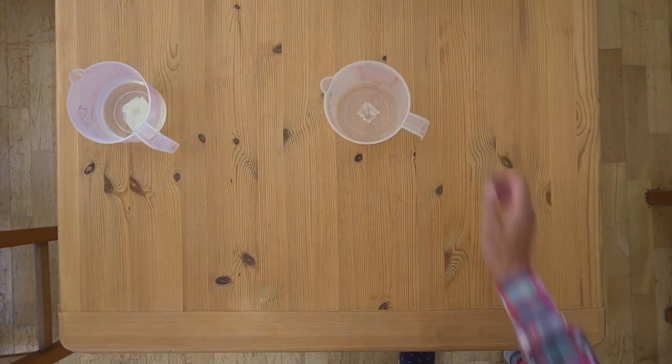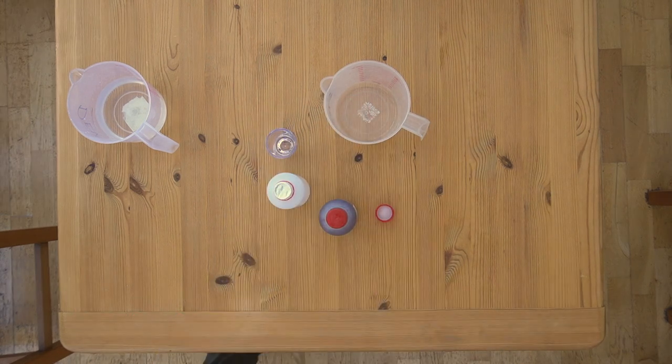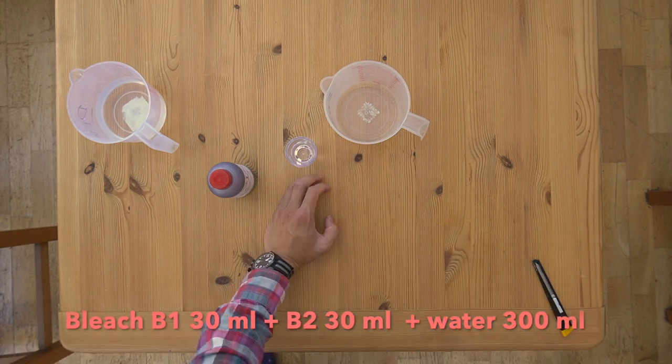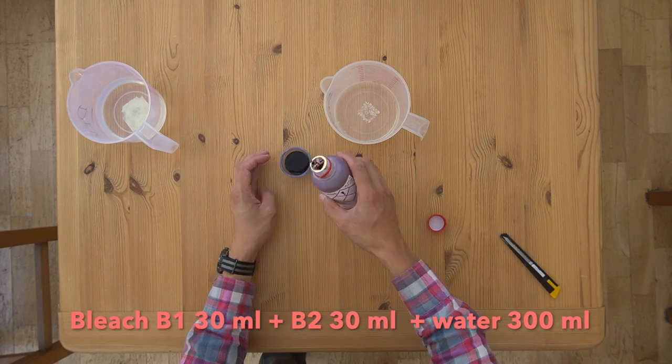For the second chemical, it's the bleaching bath which comes in two separate bottles labelled B1 and B2. We need 30 milliliters of each followed by 300 milliliters of water.